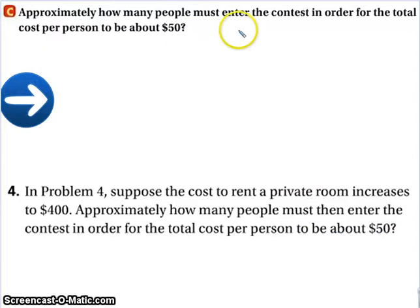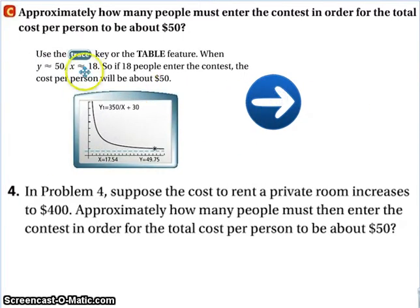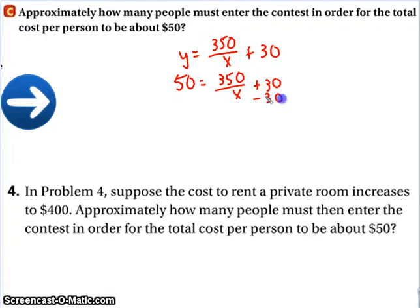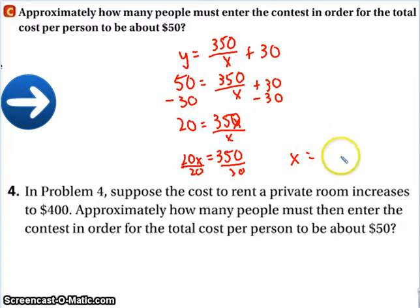Approximately how many people must enter the contest in order for the total cost per person to be about 50? We plug it in. Or, if we've used a graphing calculator, we trace it. We find the trace function. We go to where we move along until we get to about Y equals 50. And, we find out that it's 18 people. The other method is to just plug it in. We have Y is equal to 350 over X plus 30. We plug in 50. And, we solve it. So, 20X equals 350. So, we divide both sides by 20. And, we find our answer. Whenever 350 divided by 20 is. You do that. Look at number four there. Give it a try.